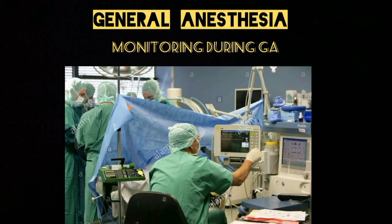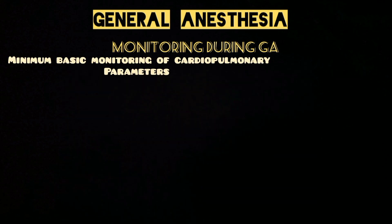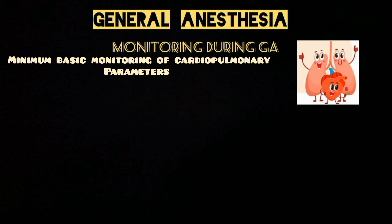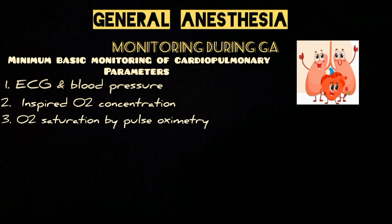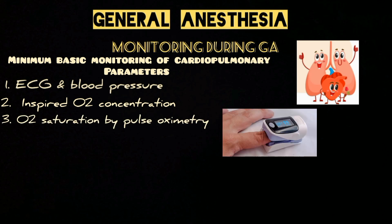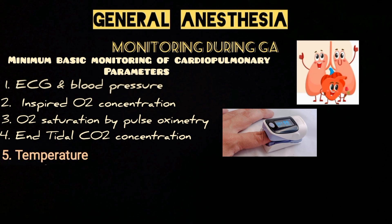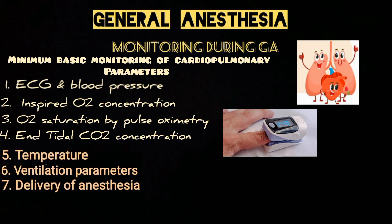Patient physiologic variables must be monitored throughout surgery, as anesthesia and surgery can cause rapid changes in vital functions. Minimum basic monitoring of cardiopulmonary parameters includes ECG, blood pressure, inspired oxygen concentration, oxygen saturation by pulse oximetry, and end-tidal CO₂ concentration. Temperature monitoring to avoid hypothermia, ventilation parameters, and delivery of anesthesia are also routinely used, while urine output and central venous pressure monitoring are recommended for major surgery.